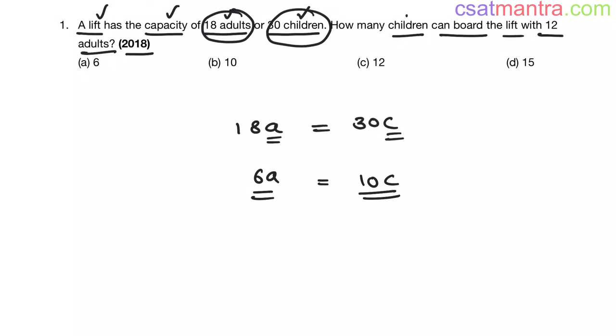Now we are asked to find how many children can board the lift with 12 adults. There are 12 adults already. Now we can board 6 more adults my friends. In total we can board 18 adults.